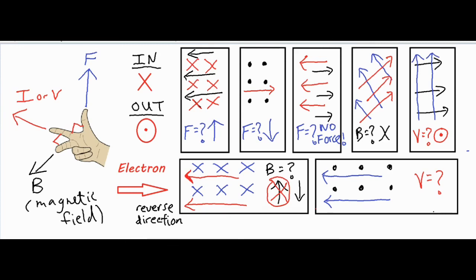For the last example, I take my middle finger and point it straight out of the screen, then have my thumb point to the left. In that case, my pointer finger ends up pointing straight down toward me. I got 'down' from the right-hand rule, but since it's a negative charge I want the complete opposite — so the answer is straight up.